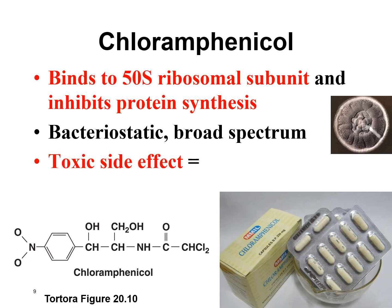Our last antibiotic that binds to 70S ribosomes and inhibits protein synthesis is chloramphenicol. Chloramphenicol is actually not used in this country anymore — the only place you might see it used is as an eye medication. It's not used internally at all, because it has a really nasty side effect. The side effect is rare, but you never know who it's going to happen to, and if it does, it's really bad: aplastic anemia.